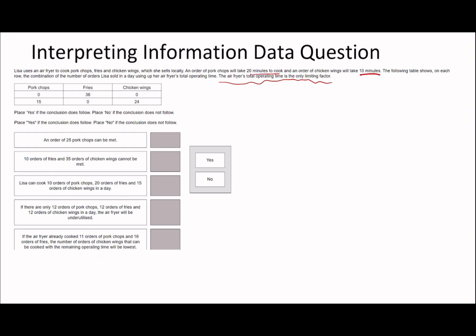Pork chops take 20 minutes, chicken wings take 10 minutes. So the total time is 15 times 20 plus 24 times 10. That's 300 plus 240, which is 540. So the total amount of time available is 540 minutes.